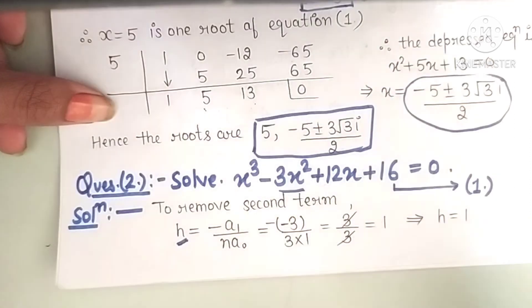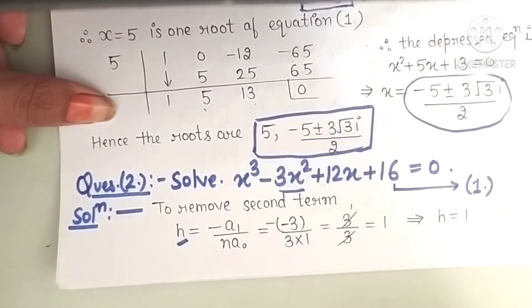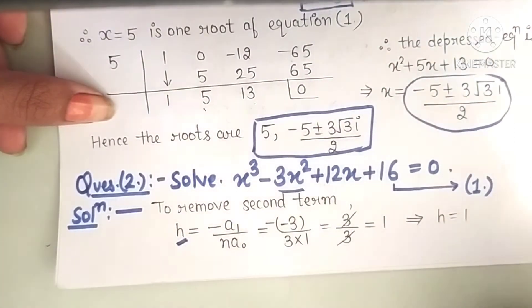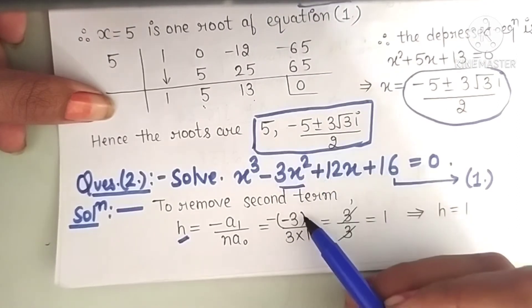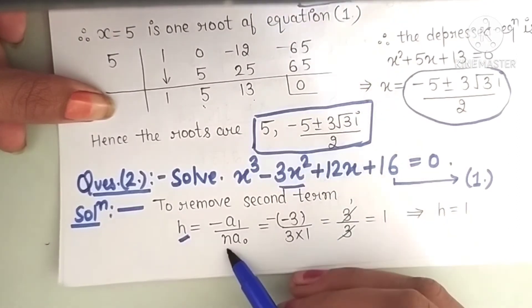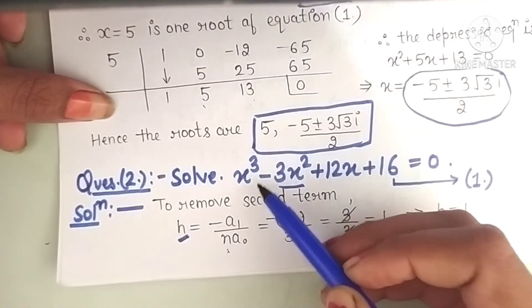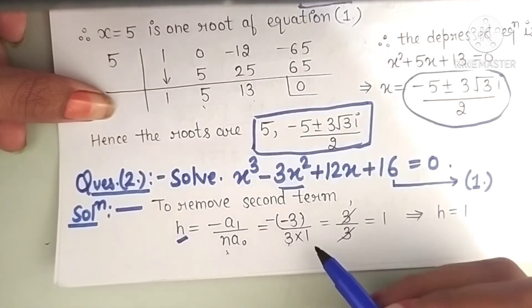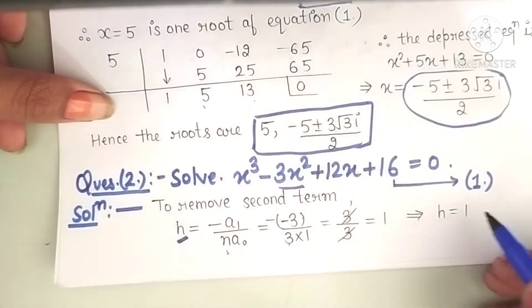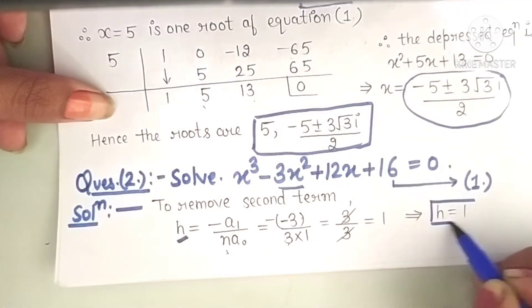To remove the square term, we diminish the roots by h. The formula for h is: h = −a₁ / (n·a₀). Here a₁ is −3, n is the degree of the equation which is 3, and a₀ is 1. So h = −(−3) / (3·1) = 1.